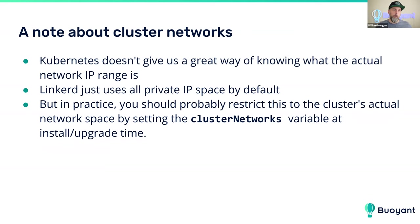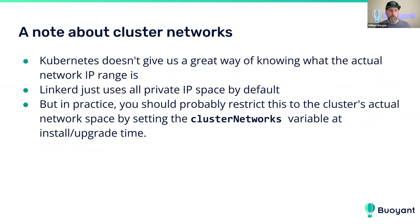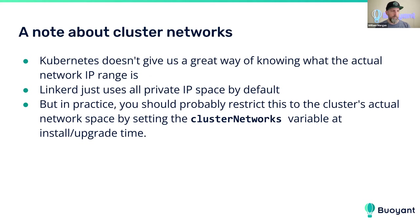Everything I'm saying is in the docs, so don't worry if you don't remember each policy name. A quick note about cluster networks: for 'cluster-unauthenticated' and 'cluster-authenticated', Kubernetes doesn't give us a great way of knowing the IP range of the cluster. By default we say everything in private IP blocks is considered part of the cluster network. But if you want guarantees, you need to update a variable that tells us your specific cluster network — like 10.0.x or 192.168.x.